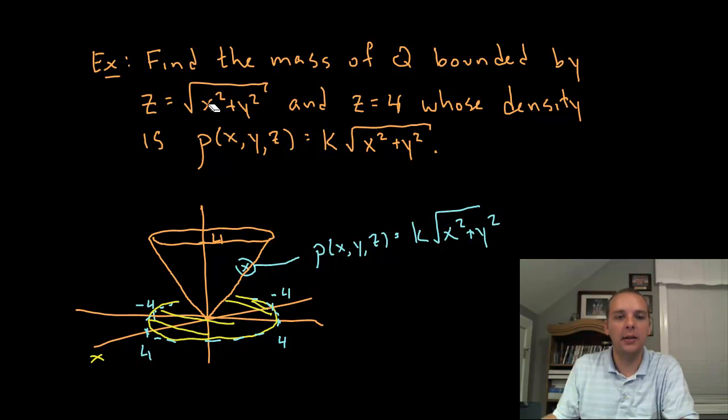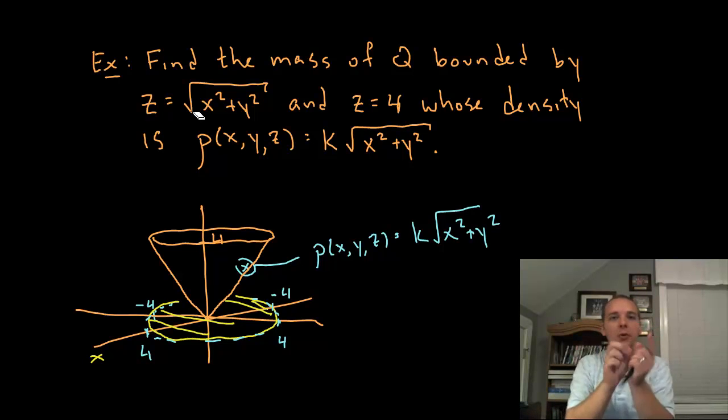Now if you're curious how that looks like a cone, if you let y be zero, if you took like a cross section, you get z equals the square root of x squared. Well that's the absolute value of x. So you get a v-shape graph that way in the xz plane. And then likewise if you let x equal zero you get an absolute value graph in the yz plane. So you have this v-shape graph that is basically being rotated around the z axis. And so you can kind of see how that would play out into a cone here.